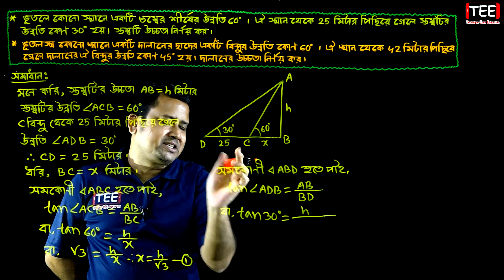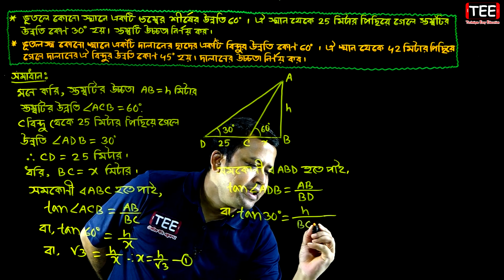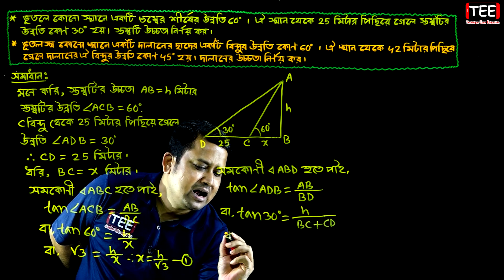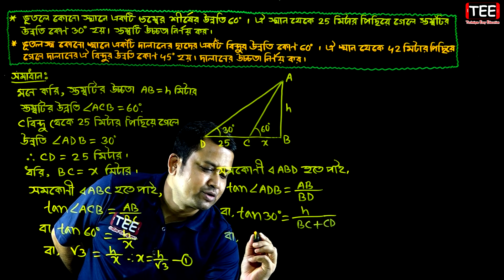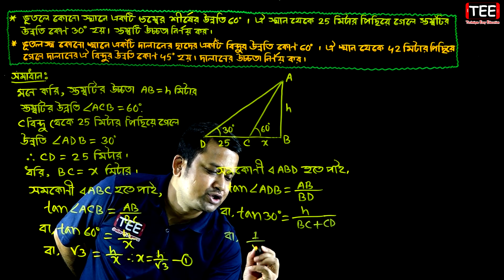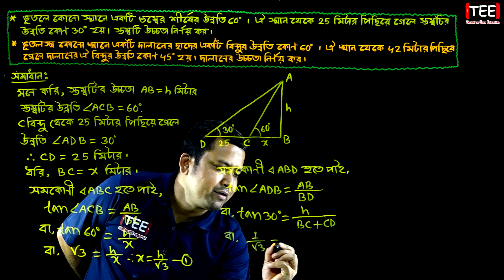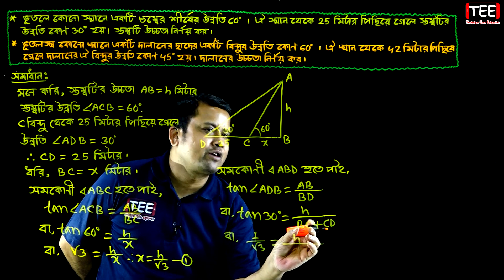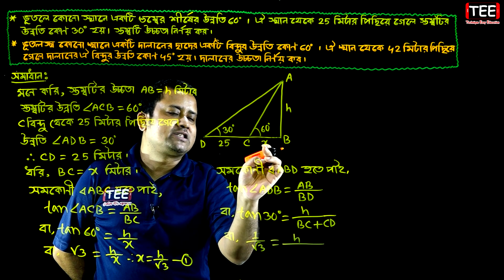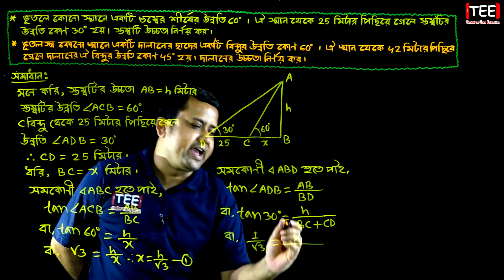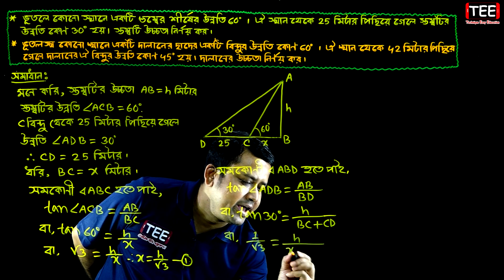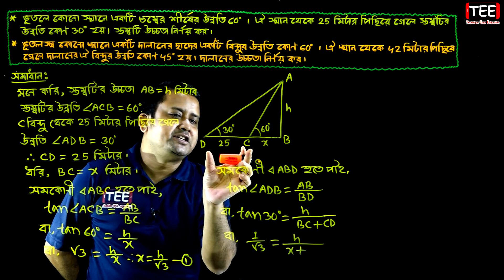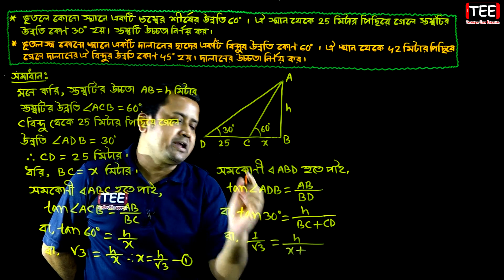Tan 30 degrees equals 1 by root 3, which equals s by BC. BC should be x plus CD. CD should be 25.